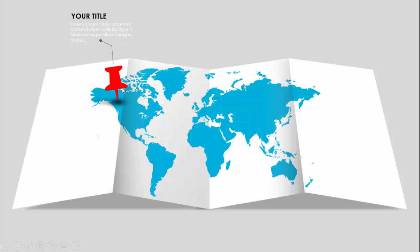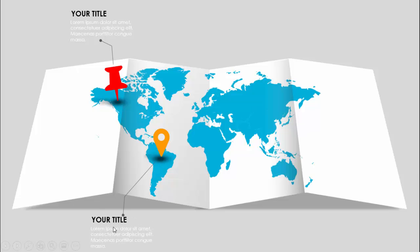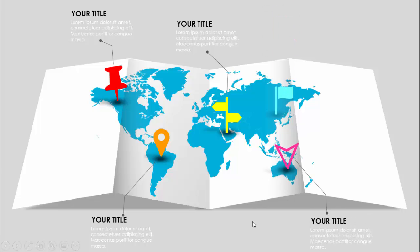When you click, the pointer appears with a shadow effect. You can add the title and detailed text. On the next click it moves to this country — the Latin American side — then the Middle East, then the Australian side, and then the China or Japan side. The map is fully editable and you can change colors as per your requirement.